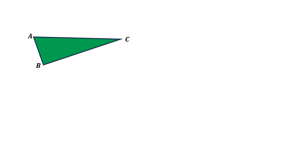Hello everyone. In this video, given is a right triangle ABC in which the angle at vertex B is 90 degrees.